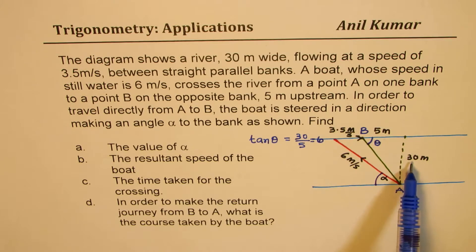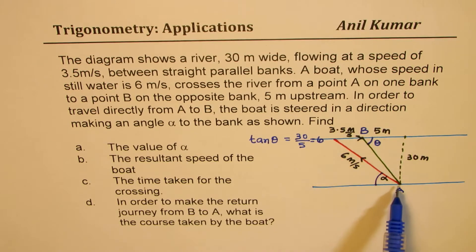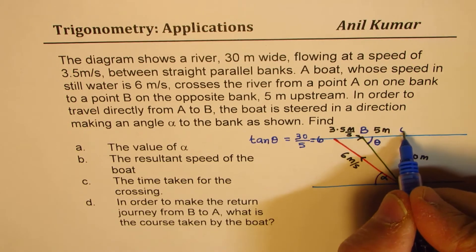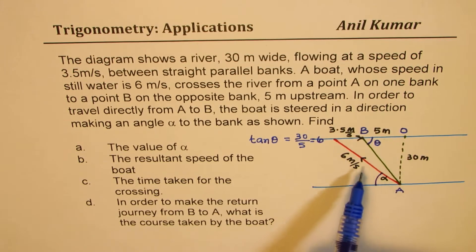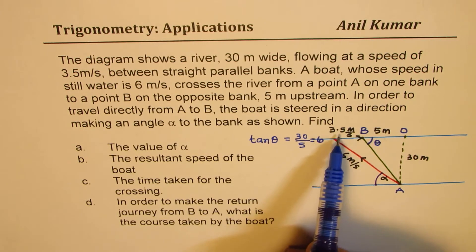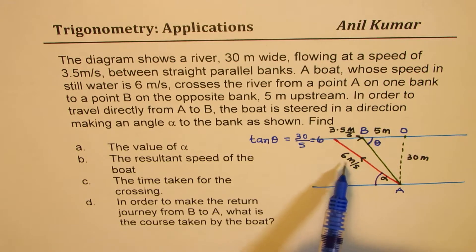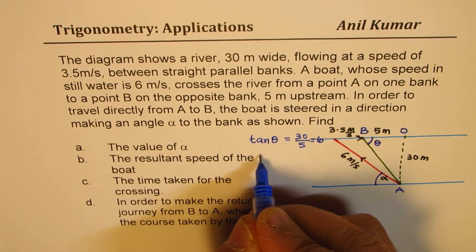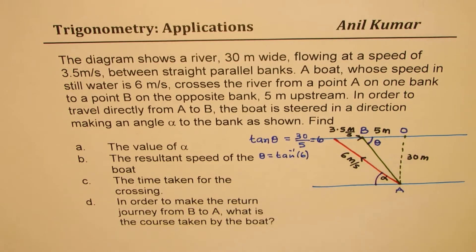What you see here are two banks separated by a distance of 30 meters — they are parallel — and the boat lands 5 meters upstream from the point directly opposite. In order for the boat to reach B, it steers at an angle of alpha with the current. 3.5 meters per second is the water current and the velocity of the boat in still water is 6 meters per second. So that gives us theta equal to tan inverse of 6.